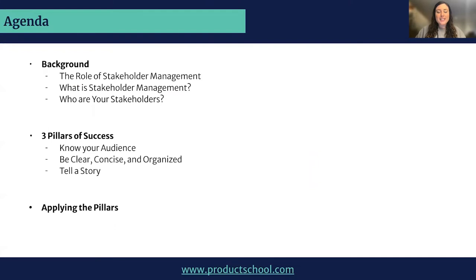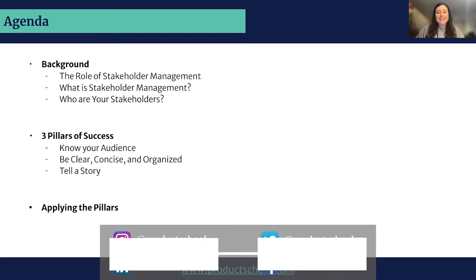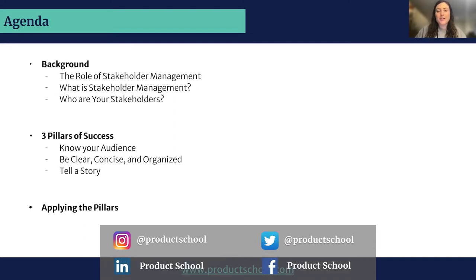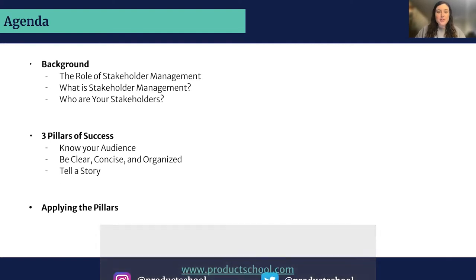The focus of our discussion today is stakeholder management. We'll be talking about three different areas: first, a background on what it is and how it applies to your role in product; then we'll cover three pillars of success — three areas I've identified as super helpful tools for being effective in this space; and finally, we'll apply those pillars and look at a real-life example. I encourage you to think about some of the most difficult stakeholders you've worked with — whether challenging, pushing against your decisions, or a bit crabby. These are tools to work with them more effectively.